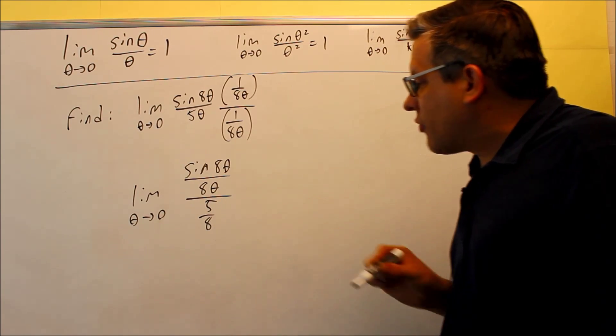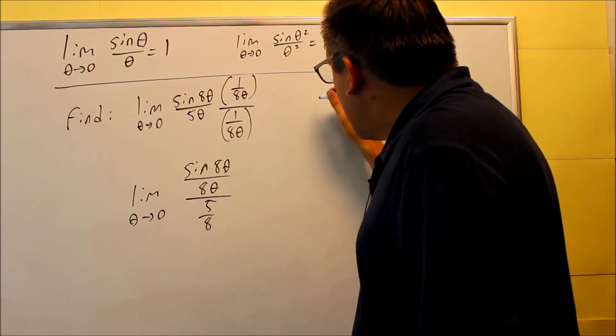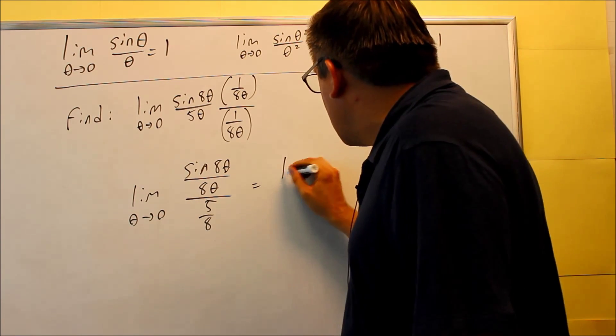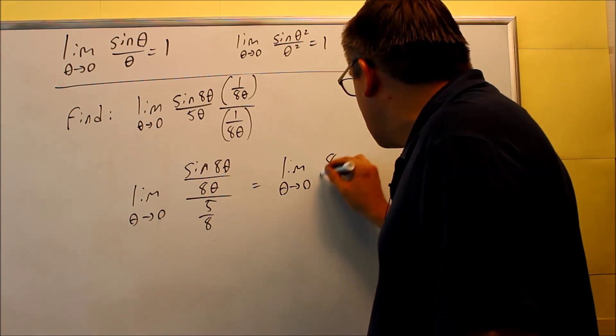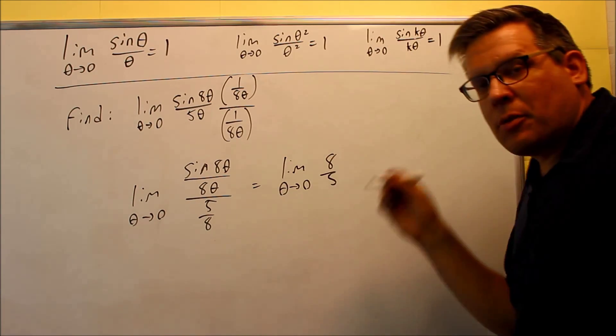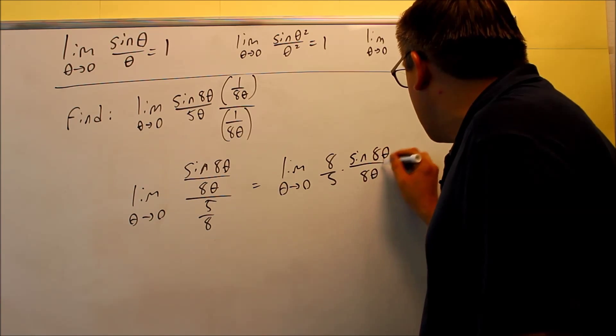So I want to get rid of this fraction that's down here by multiplying by the reciprocal. So when I multiply by the reciprocal, what will happen is I can write this as eight fifths, top fraction multiplied by the reciprocal of the bottom one, and it gets sine of eight theta over eight theta.